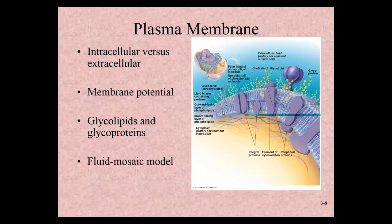This membrane is what we call selectively permeable. Selectively means that only certain things are able to pass through it. Permeable means that items can go from inside the cell to the outside, or from extracellular to intracellular. For example, insulin needs to leave the cell to act on other cells, while glucose from digestion needs to enter cells from the outside.